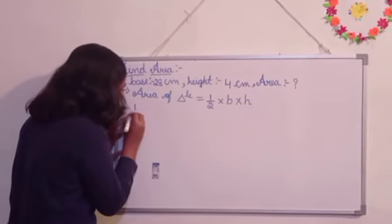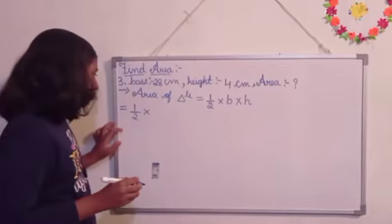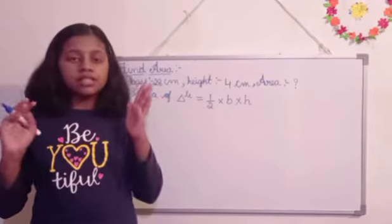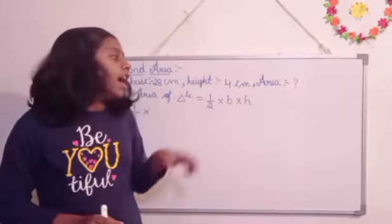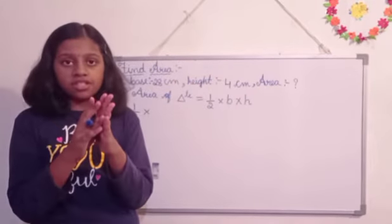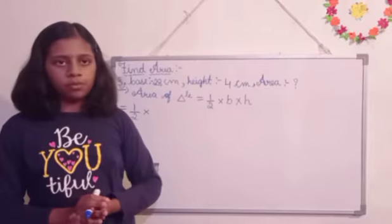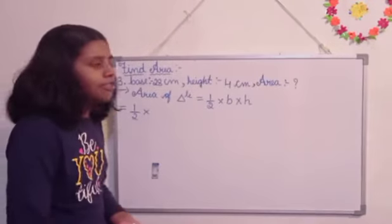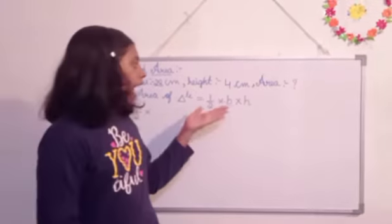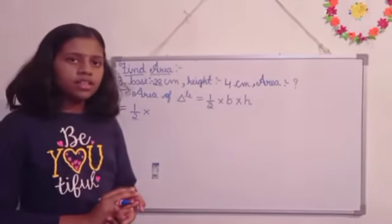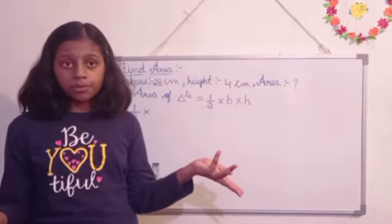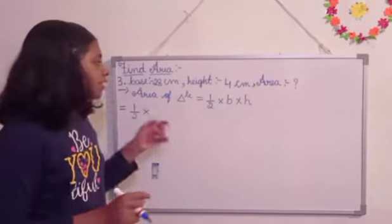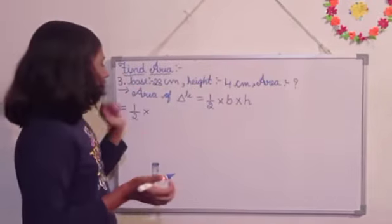is equal to half into, half and multiplication symbol is common, as it is in all the questions, problems and steps. Got it? Half is compulsorily to be written and multiplication sign. The sign which will be that, that is compulsorily to be written in all the formulas, steps or any questions. Got it? So half into as it is we wrote and B into H is there. So how to write? If we wrote B into H as it is, it will not become the problem. So B means the value of base we are going to write here. Got it? So the value of base.